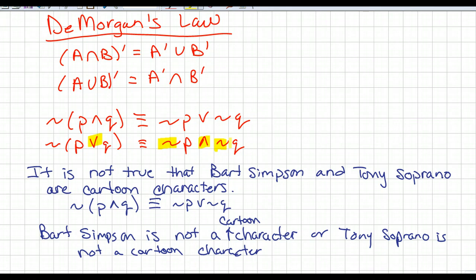So an example of that would be, it is not true that Bart Simpson and Tony Soprano are cartoon characters. Remember, when I'm saying it is not true in the beginning, that means you have this negation on the outside of some parentheses. So I wrote this out, and then we also know that the equivalent statement using DeMorgan's Law is not P or not Q. So going back to the English, I can write this as Bart Simpson is not a cartoon character or Tony Soprano is not a cartoon character.